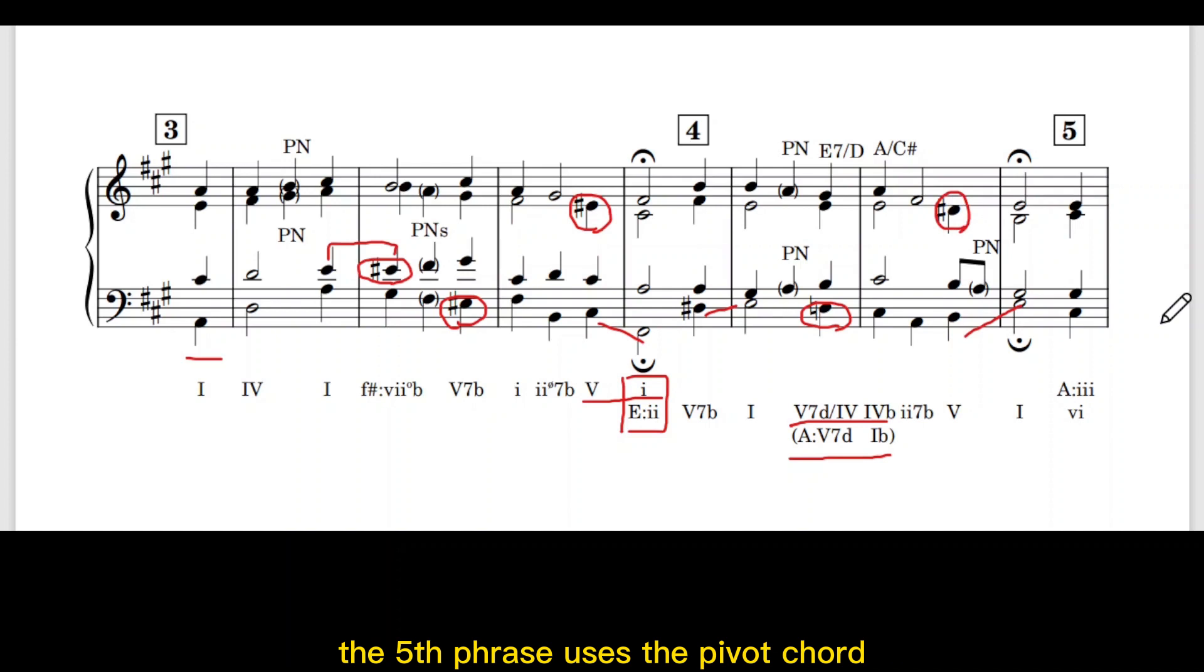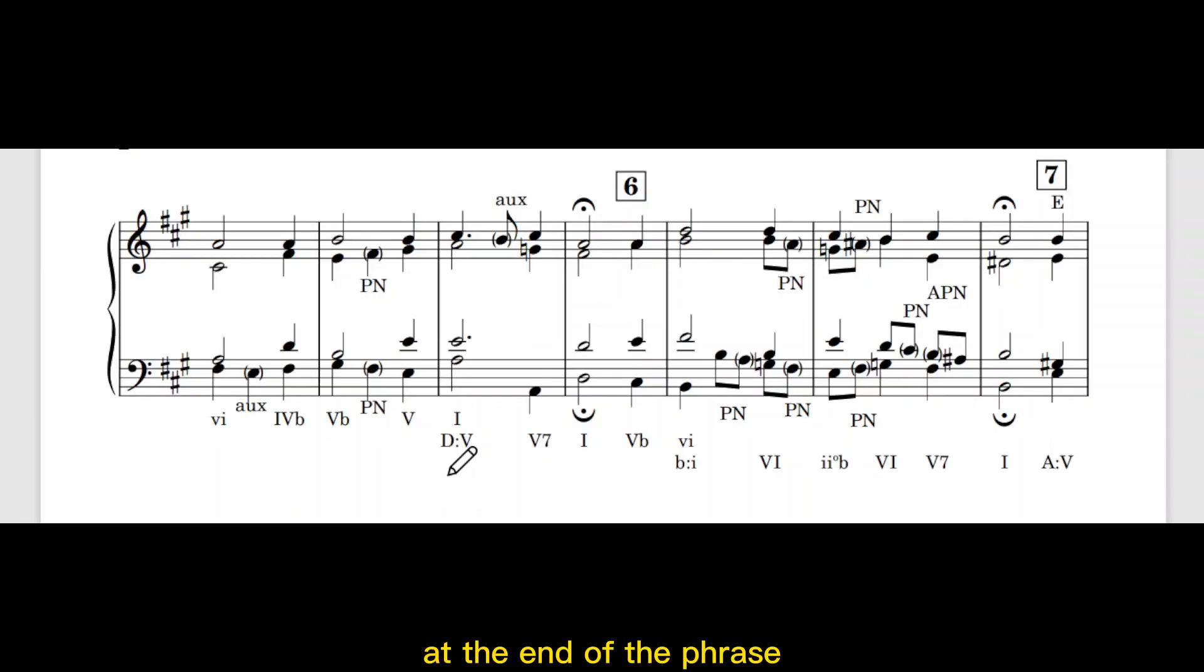The fifth phrase used a pivot chord E major 6 equals to A major 3. This brings us back to A major. At the end of the phrase, a modulation to D major occurred here with the G natural and a perfect cadence.